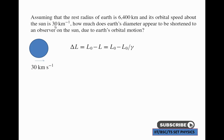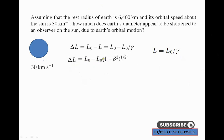Delta-L equal to L-naught minus L, where L-naught is the real diameter and L is the contracted diameter. Since L equal to L-naught by gamma, delta-L equal to L-naught minus L-naught over gamma. This simplifies to delta-L equal to L-naught times (1 minus 1/gamma). Using 1/gamma equal to (1 minus beta²) to the power 1/2, we get delta-L in terms of beta. Beta equal to v/c.